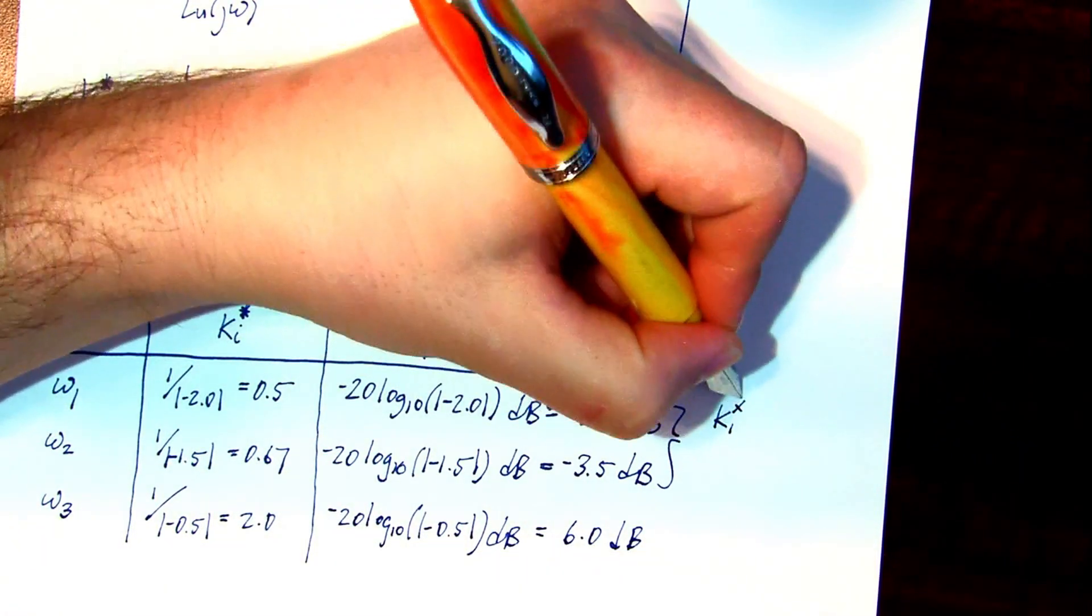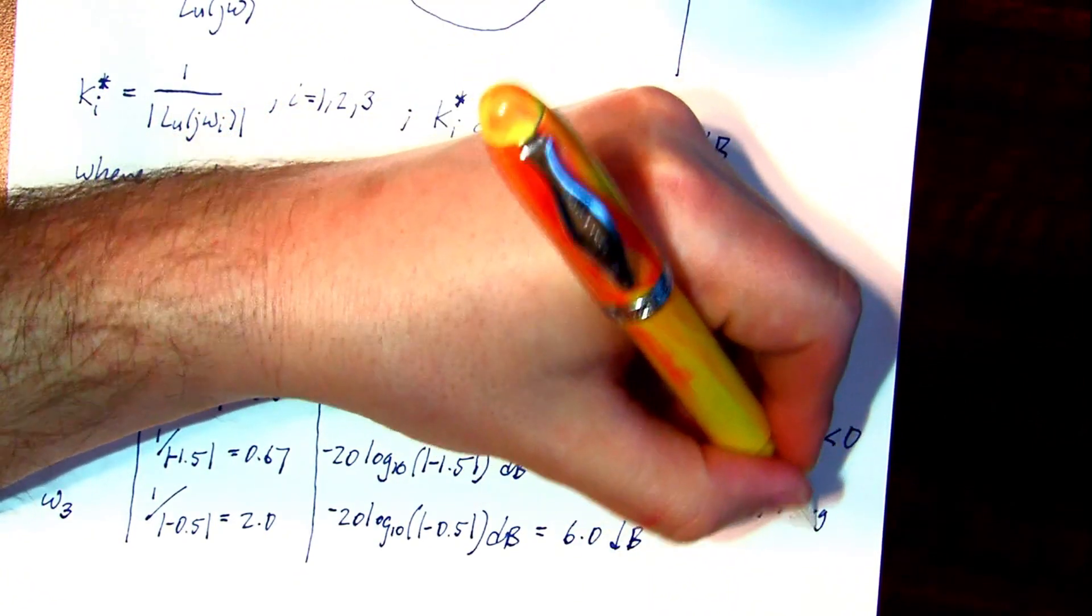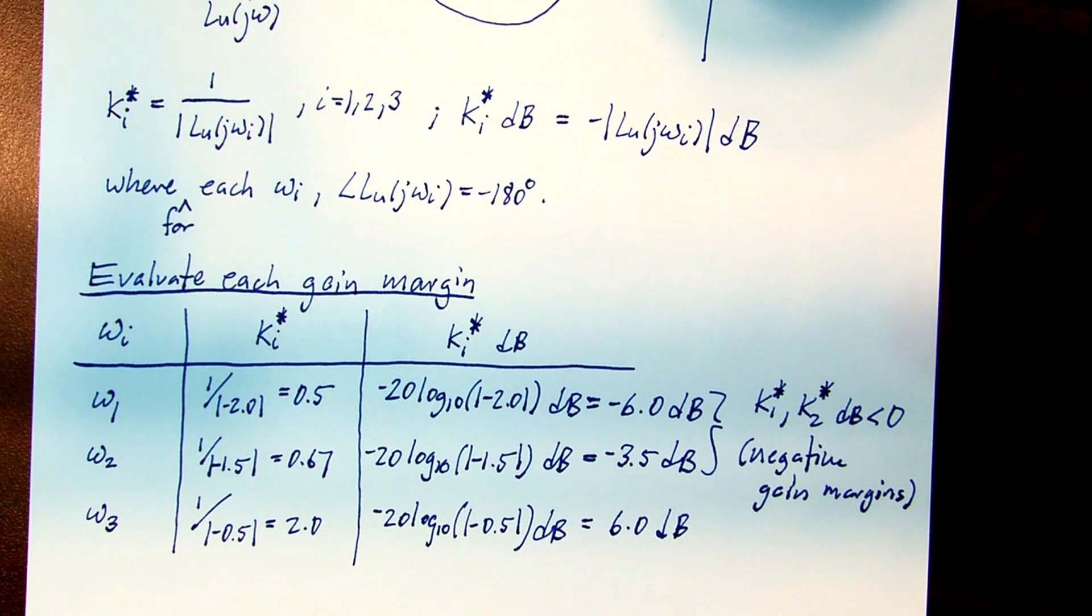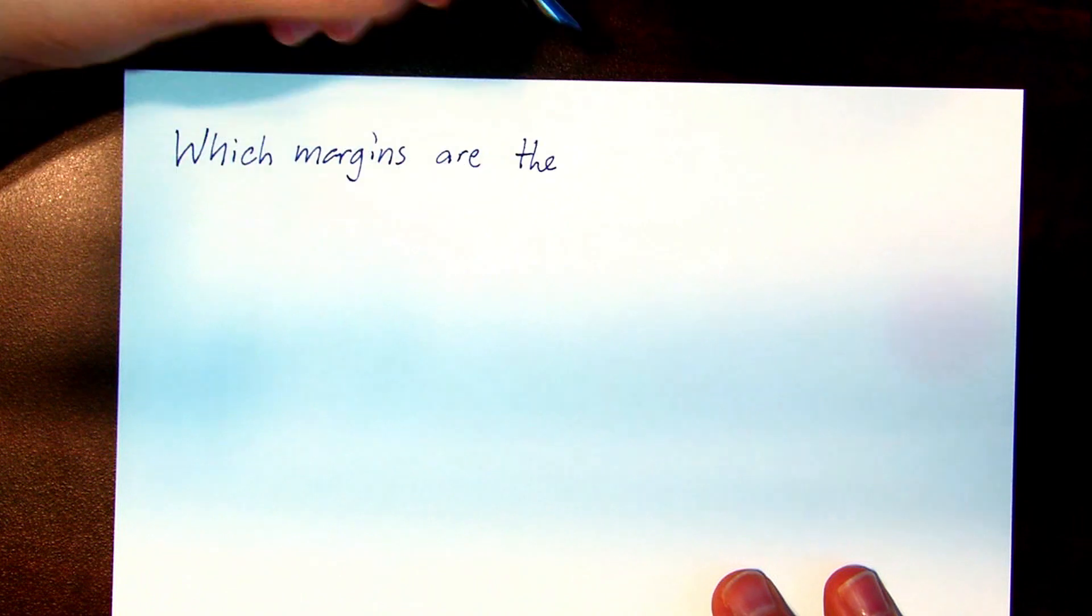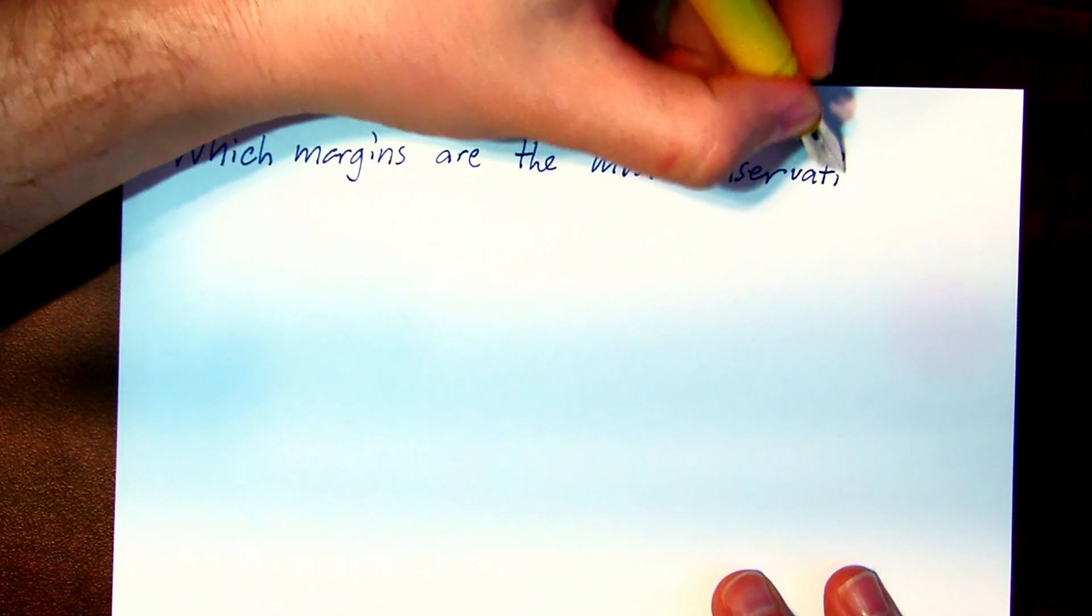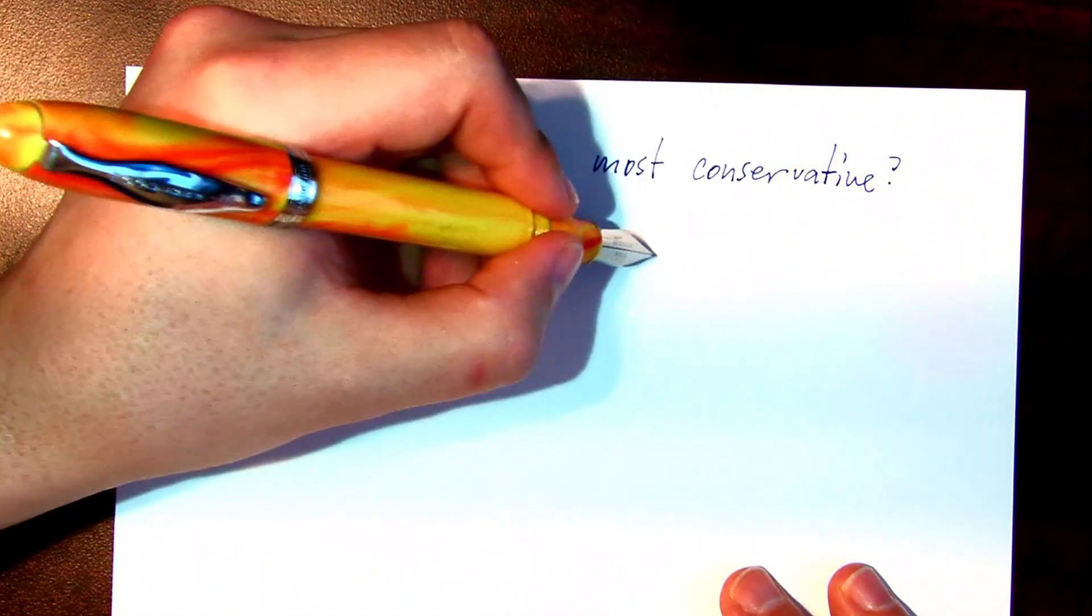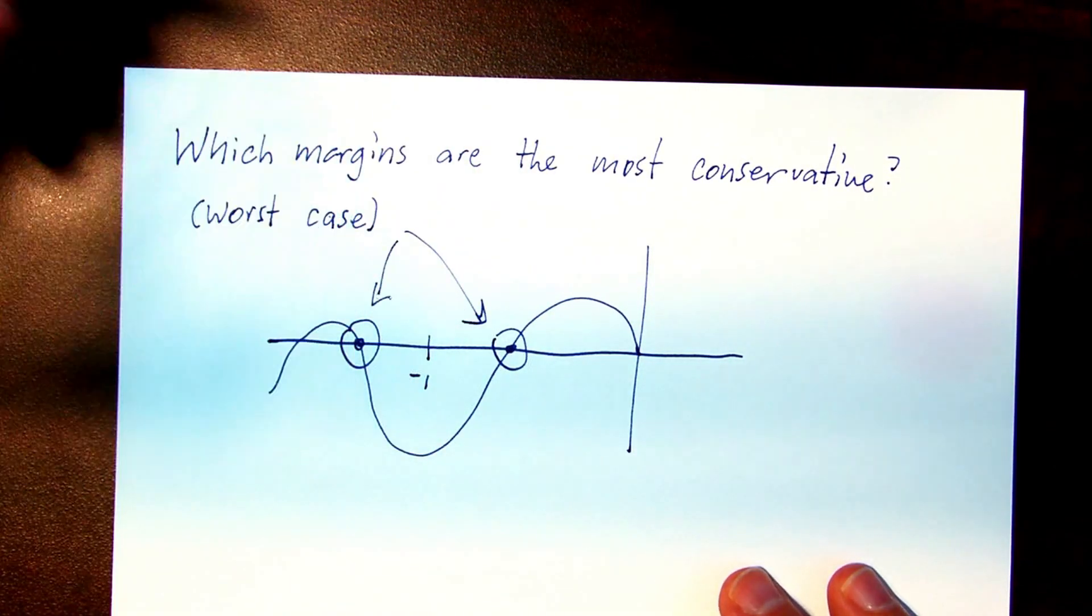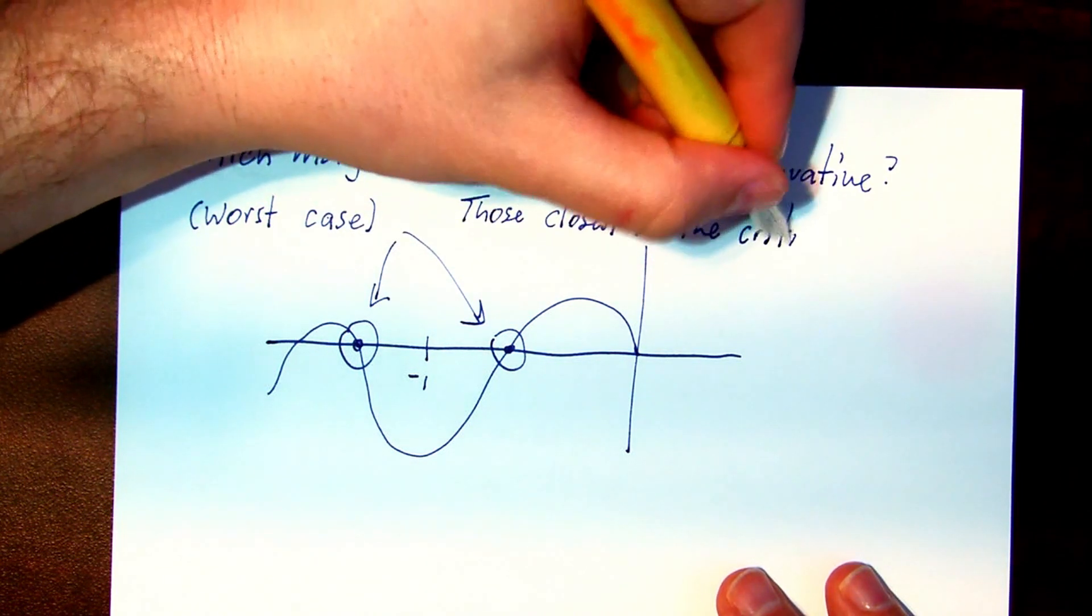So note that we have two negative gain margins. Since we have multiple margins, which ones should we be looking at to assess robustness or assess stability? Another way to ask is, which margins are most conservative? Well, that would be those points on the loop gain, those margins that are closest to the critical point.